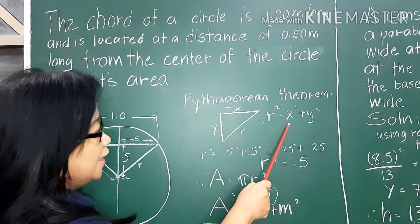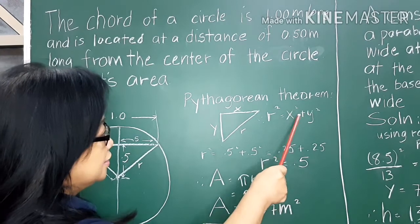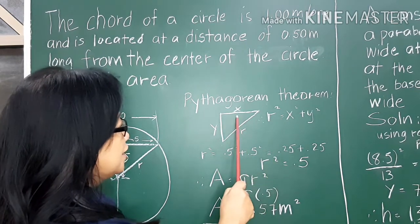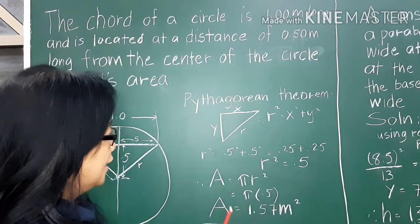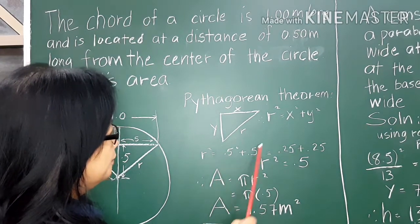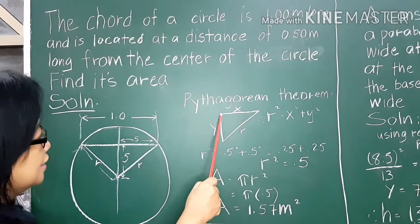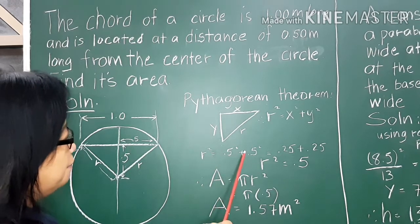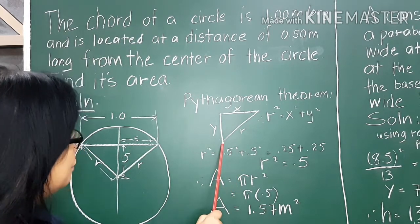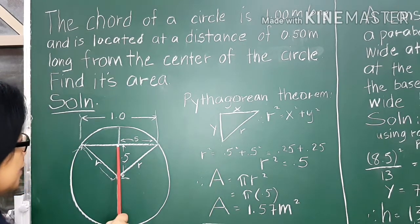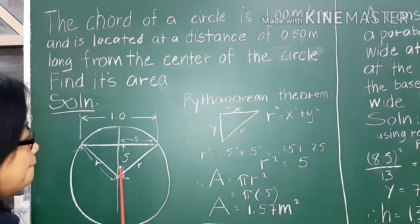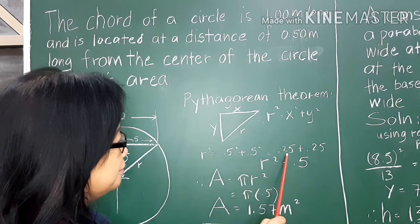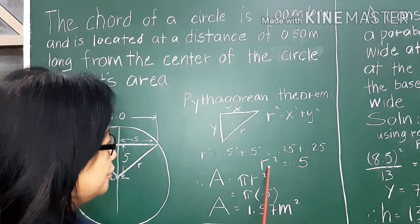r squared is equal to x squared plus y squared. Therefore r is equal to the square root of x squared plus y squared. x is given as 0.5 (half the chord length), and y is also 0.5 (the distance from center to chord). So r squared equals 0.5 squared plus 0.5 squared, which is 0.25 plus 0.25.